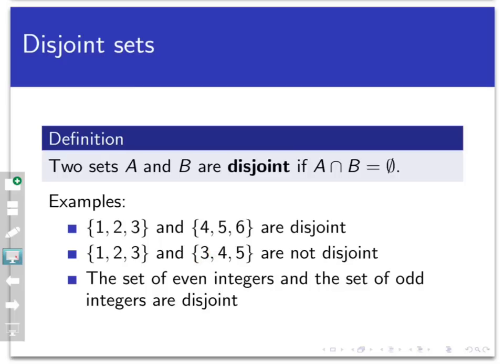In fact, in this case there's exactly one element that belongs to their intersection. So {1,2,3} and {4,5,6} are disjoint; {1,2,3} and {3,4,5} are not disjoint. Another example: the set of even integers and the set of odd integers are disjoint — there's no integer that belongs to both of those sets at the same time.